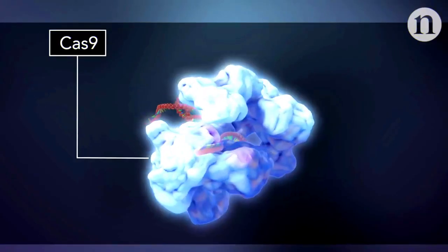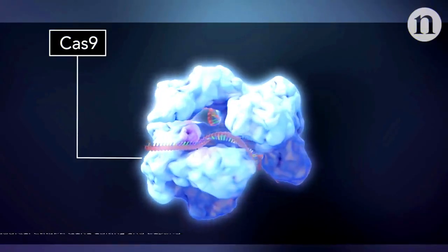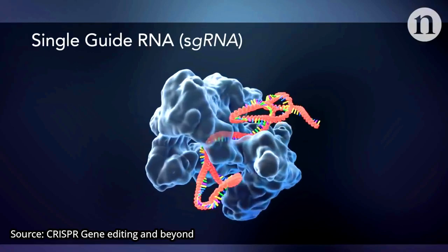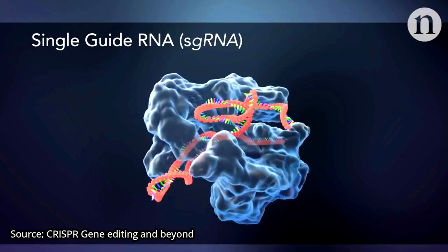Since the CRISPR-Cas9 system has been discovered in a bacterial immune system, it has been adapted into a powerful tool for cutting DNA at specifically targeted locations in the genome of the cell. There are two components to the system: the DNA cutting protein called Cas9, and the RNA molecule known as the guide RNA.